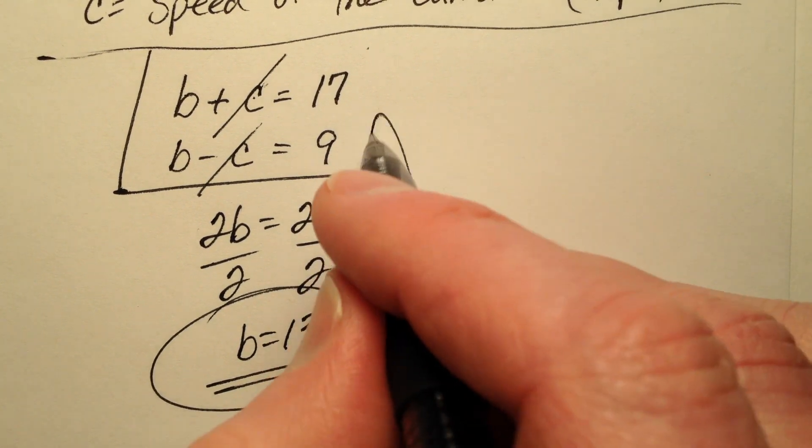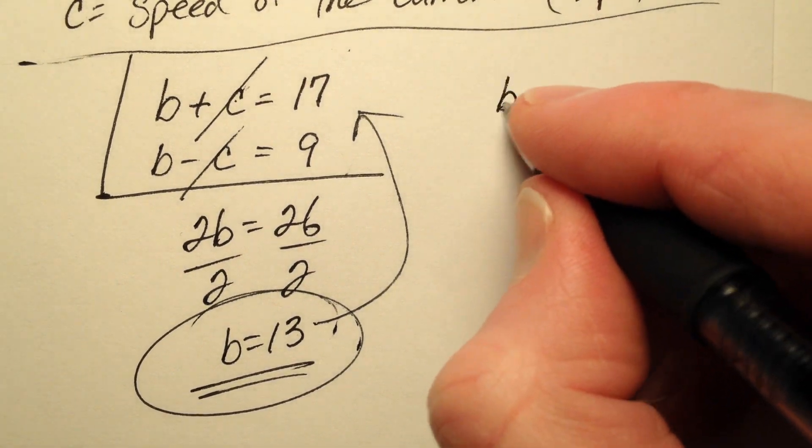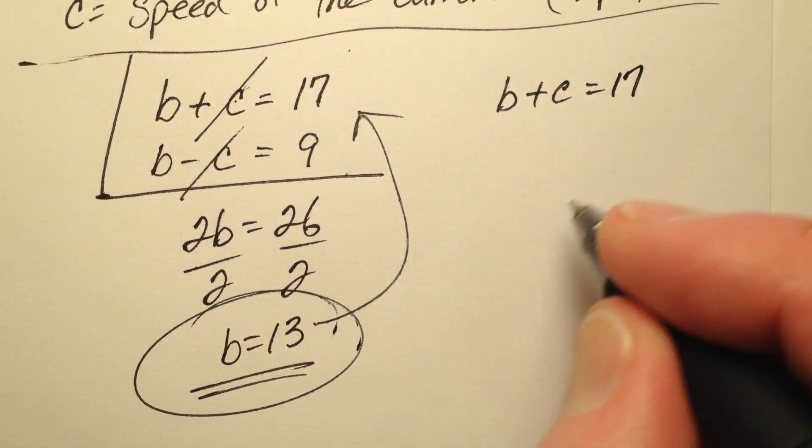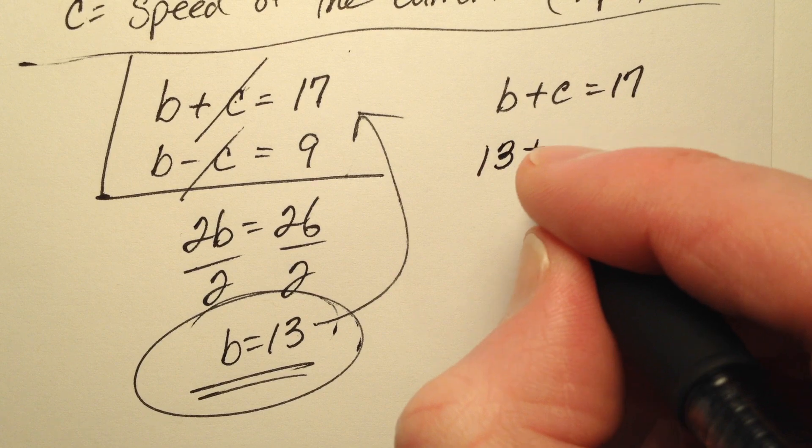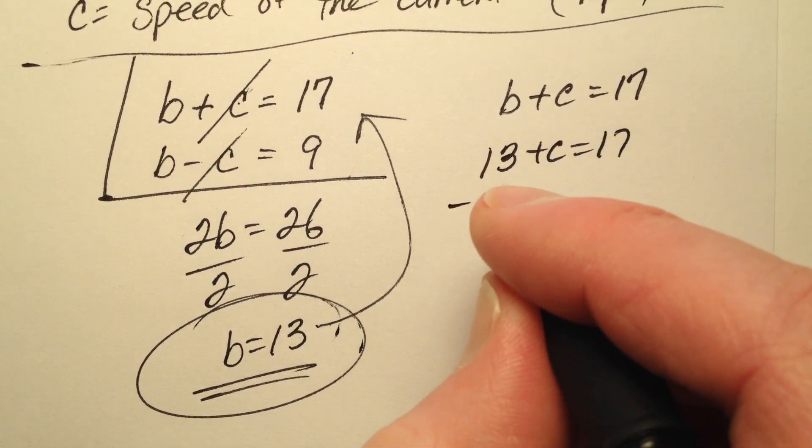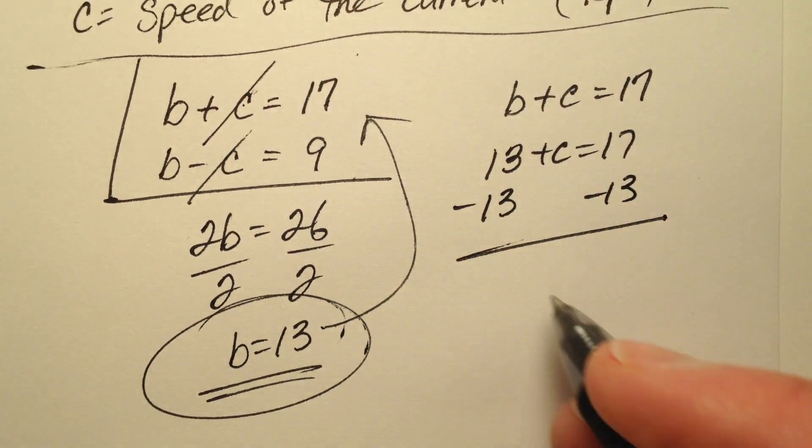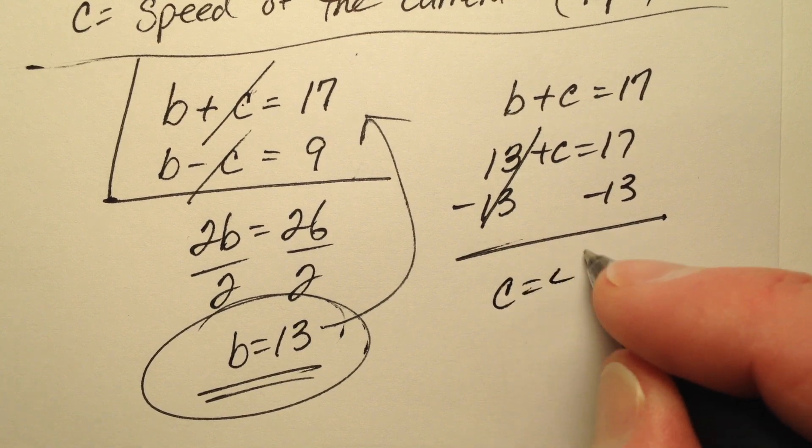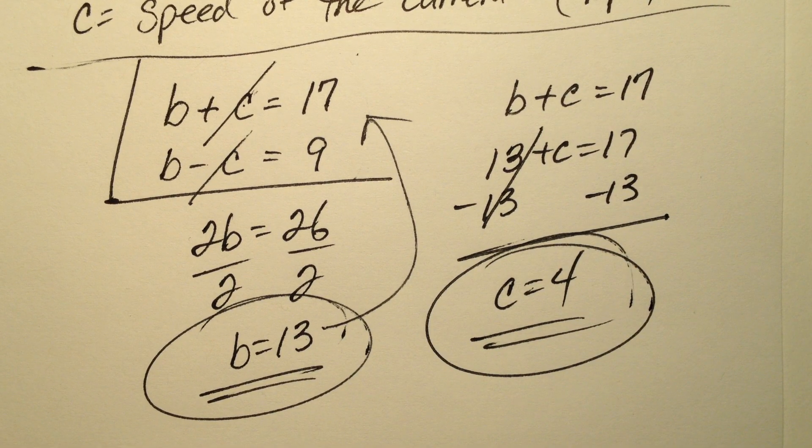Now that I have the value for one of the variables, I can go ahead and plug it in here. So I know that b plus c equals 17, and b was 13. So when I go through and subtract 13 from both sides, it looks like c is going to be 4.